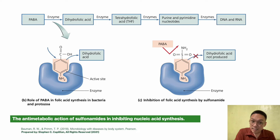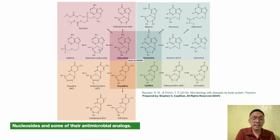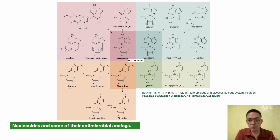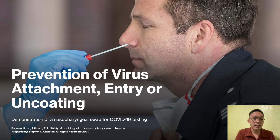These are the nucleosides and some of their antimicrobial analogs. The arrows indicate the synthesis pathways. For simplicity, the nucleotides and analogs are shown without phosphate groups — depicted as nucleosides. A question to consider: how do nucleoside analogs interfere with DNA replication and RNA transcription?